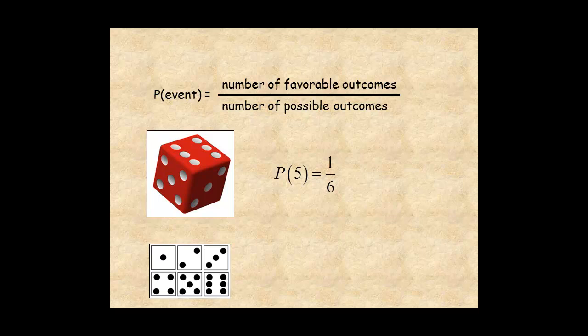Probability can be written as a fraction, a percent, or a decimal. So the probability of rolling a 5 is 1 sixth, or about 17%, or 17 hundredths.